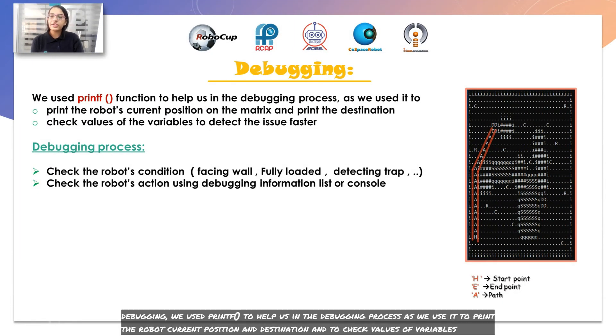Debugging: we used a print function to help us in the debugging process, using it to print the current position on the matrix, the destination, and to check the list of variables.